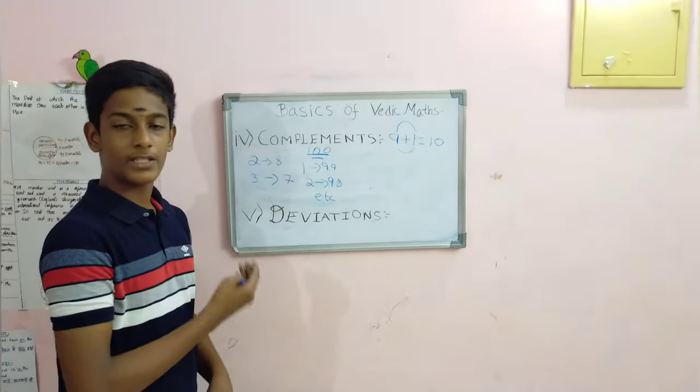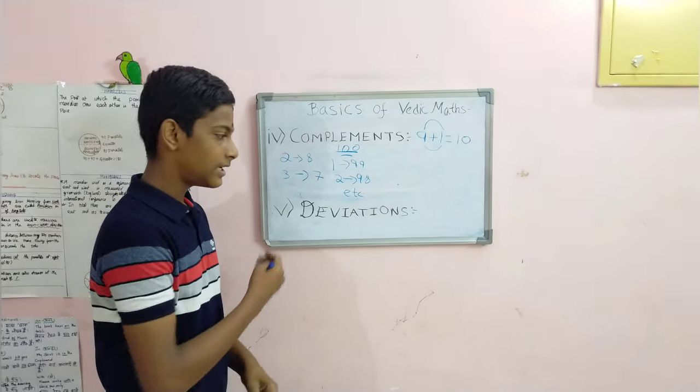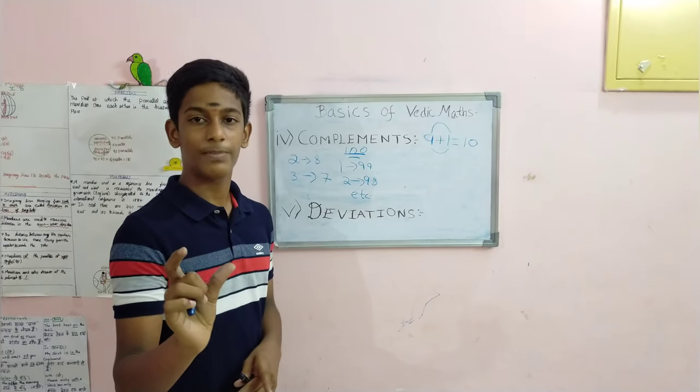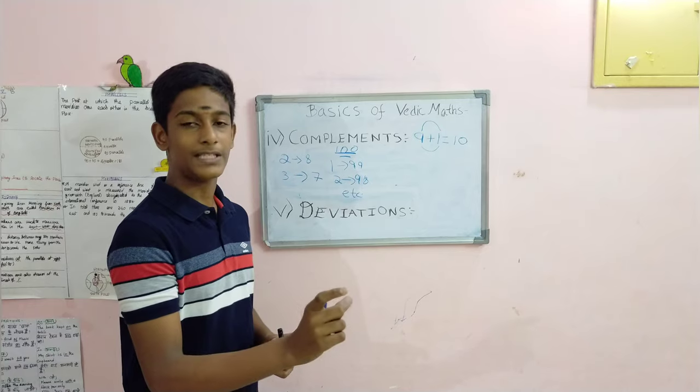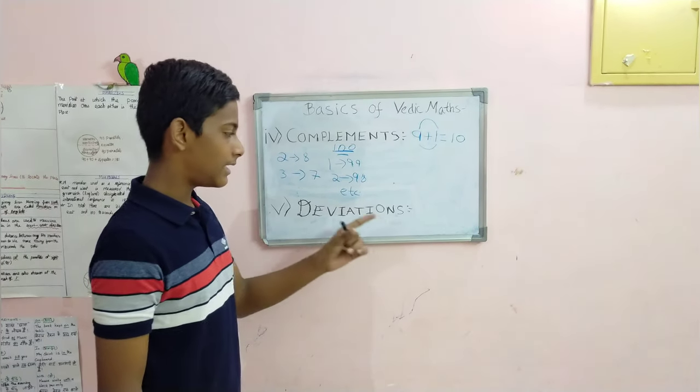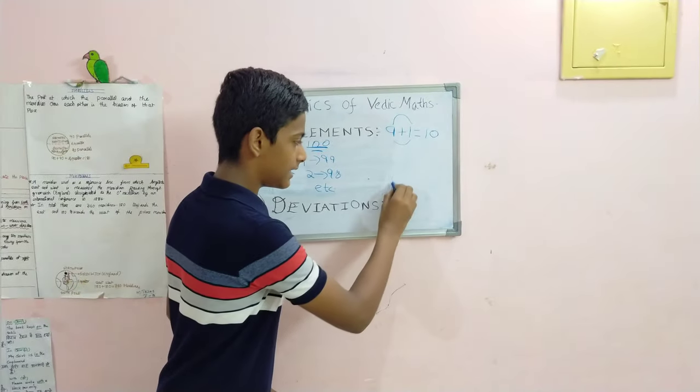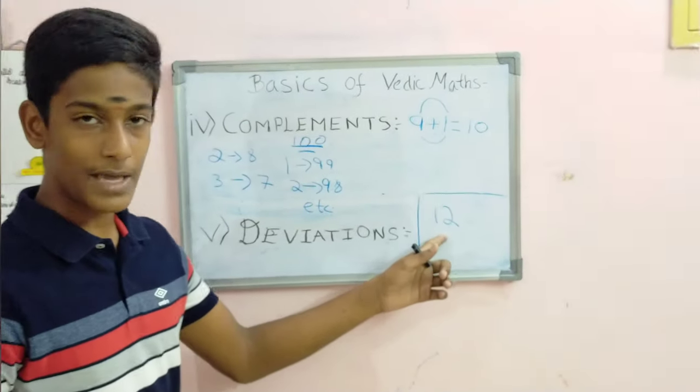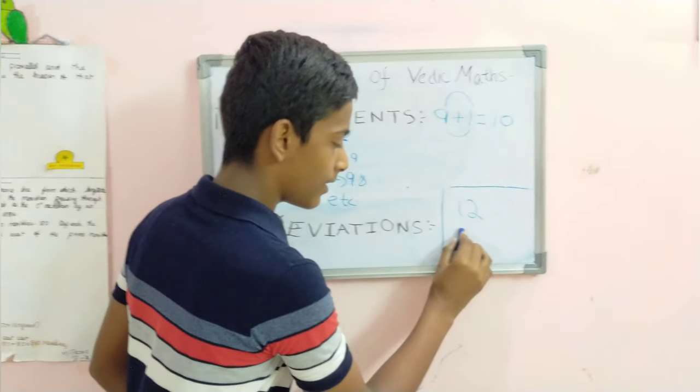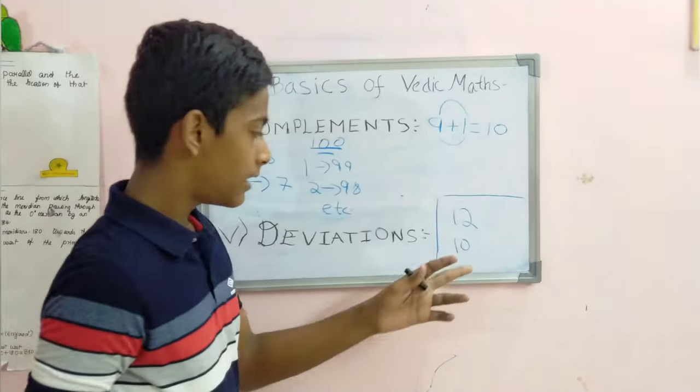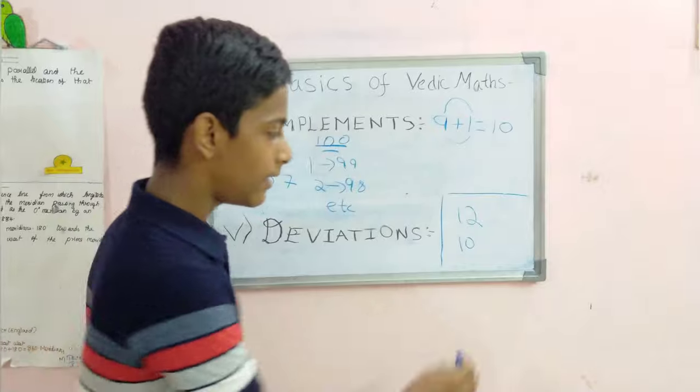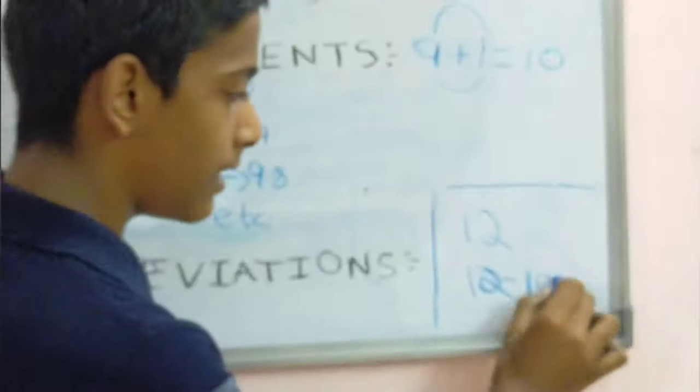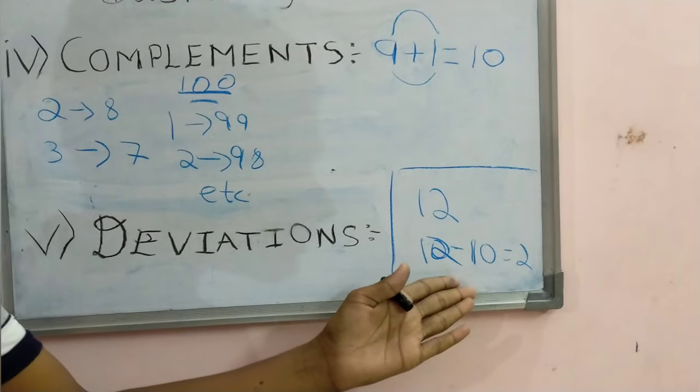Now, let's move on to our next topic, that is Deviations. Deviations are the difference between the nearest base number and the number given. Let's take the example as 12. Here, the nearest base number is 20 or 10. Let's take 10. 12 minus 10 gives us 2. So 2 is our deviation.